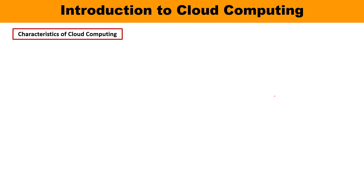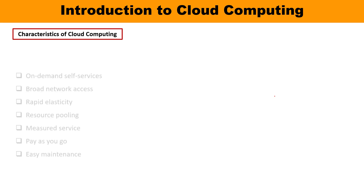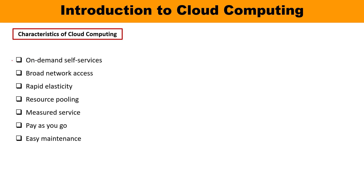Now let us talk about the characteristics of cloud computing. The first is on-demand self-service. Whenever there is a requirement, or depending upon the demand of the user, the service is provided. Cloud computing services do not require any human administrator — users can themselves raise requirements, monitor, and manage resources as needed. The second characteristic is broad network access, meaning cloud computing services are provided over standard networks and heterogeneous devices.